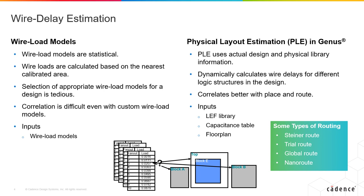Therefore, they need to correlate to the actual routing performed by the physical design tools. The foundries supply the wire load models along with the timing libraries, and you can plug the wire load models into your static timing analysis tool to calculate your net delays.